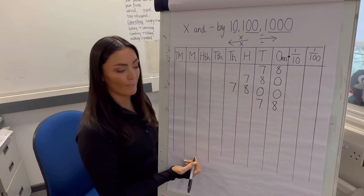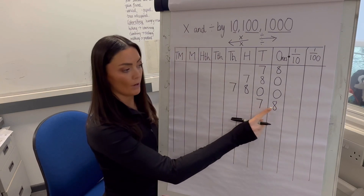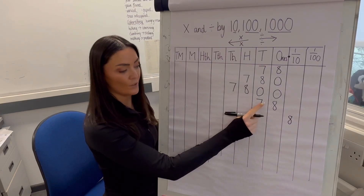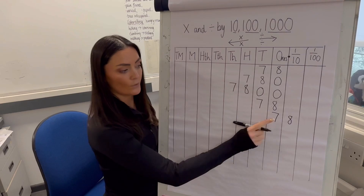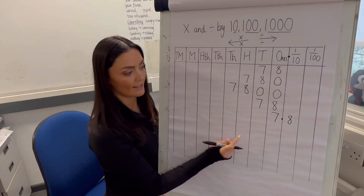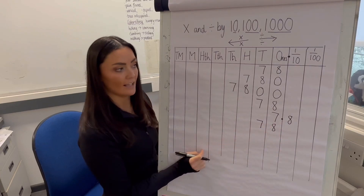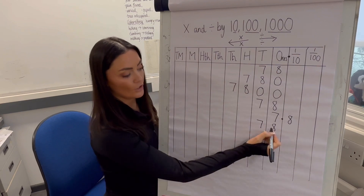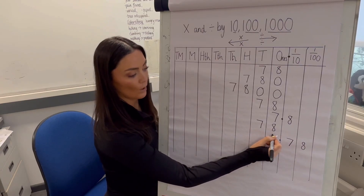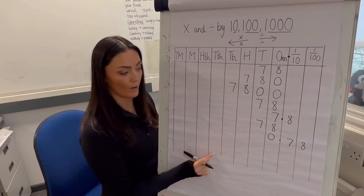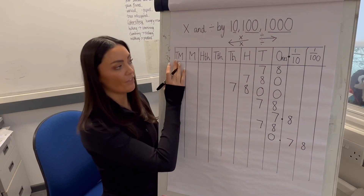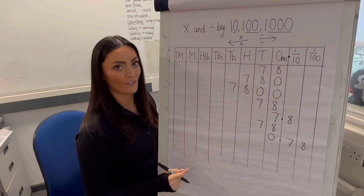Dividing 78 by 10: everything gets 10 times smaller. The 8 ones become 8 tenths; the 7 tens become 7 ones (70 ÷ 10 = 7). Remember to put the decimal point in: 78 ÷ 10 = 7.8. Dividing 78 by 100: everything moves two places to the right — the 8 moves two places, the 7 moves two places — giving 78 ÷ 100 = 0.78.